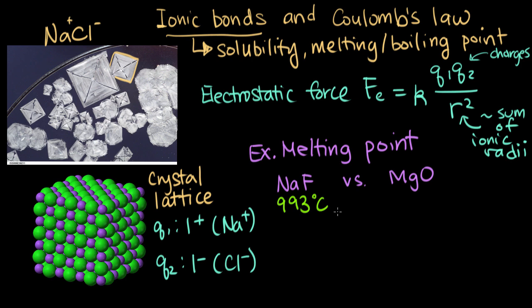Sodium fluoride has a melting point of 993 degrees Celsius, and magnesium oxide has a melting point of 2,852 degrees Celsius. The other information we know about these two compounds—if you look up the ionic radii, it turns out that sodium fluoride, the distance between the ions, is about the same as magnesium oxide. They're not exactly the same, but they're pretty close. So if we were to say that R is approximately the same for these two, then we can explain the difference in melting points using the charges.